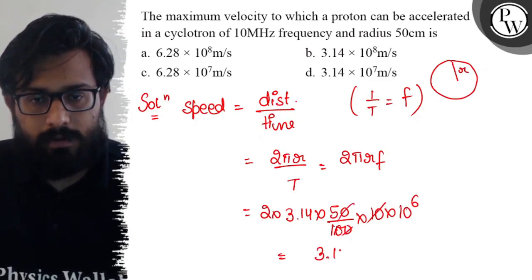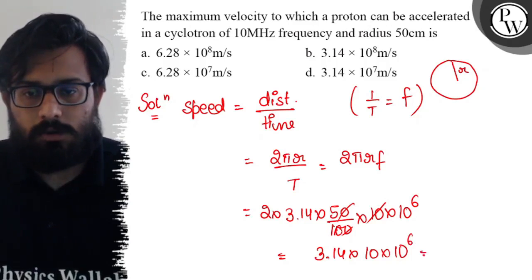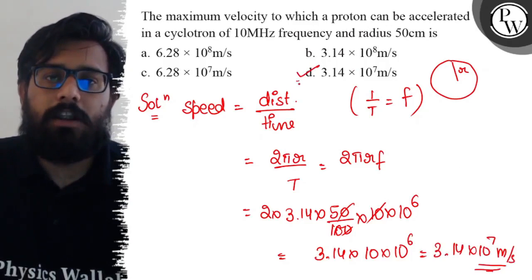and solving we get 3.14 × 10^6, which gives 3.14 × 10^7 m/s. This is the answer, and as you can see, this matches option D.